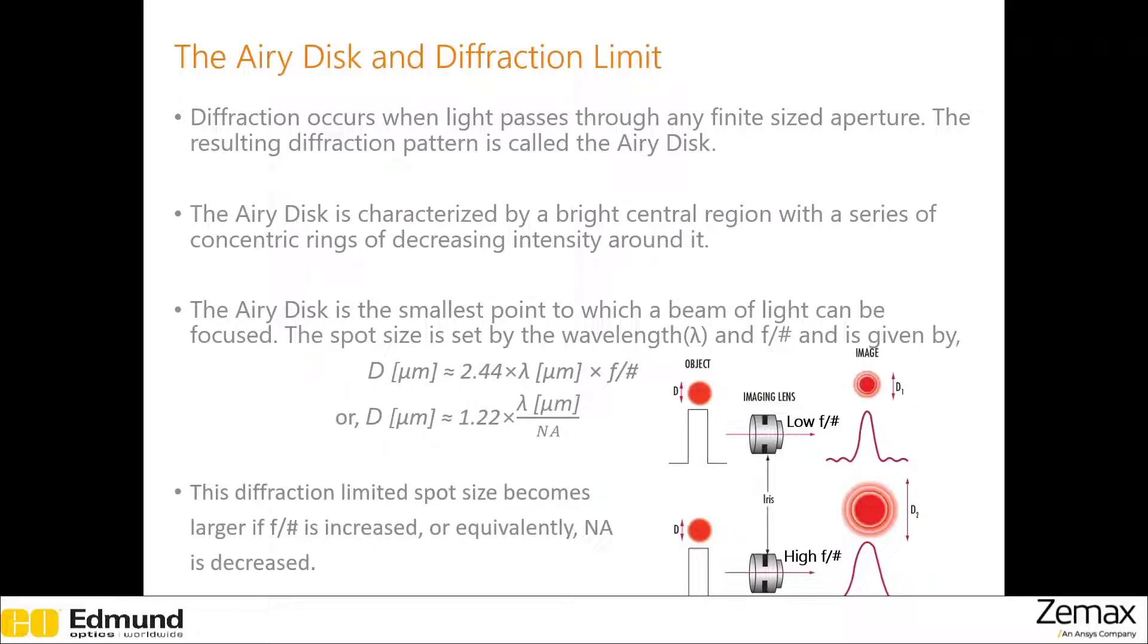Let's say you have a circular aperture. When light passes through this finite sized aperture, you will obviously see diffraction. The resulting diffraction pattern with a bright central region and a series of concentric rings of decreasing intensity around it is known as the Airy disc.